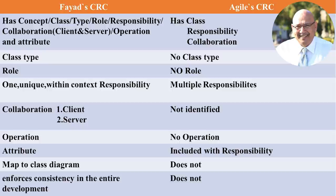Eighth difference: the Friyad CRC card maps directly to the class diagram. By doing that, we're mapping the card to show how to do collaboration between classes. In the Agile CRC card, there is no such mapping. Ninth difference: the Friyad CRC card enforces consistency across the entire development. Because all CRC cards map to a class diagram directly, you achieve a very clean mapping. In Agile, you don't have that mapping — this is a real problem.